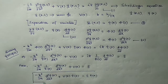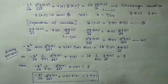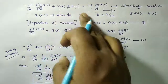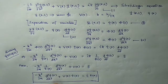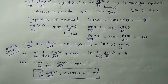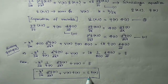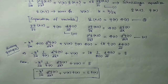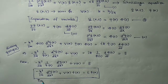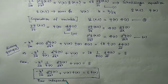Our partial differential Schrödinger equation, which was a function of Ψ(x,t), now turns into an ordinary differential equation — a function of x only. This is called the time-independent Schrödinger equation. If we have knowledge of the potential energy of the system, we can obtain the solution for ψ(x).